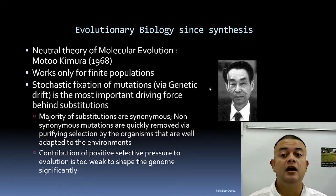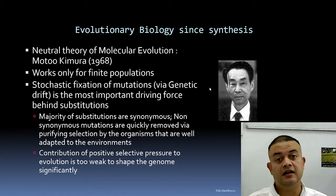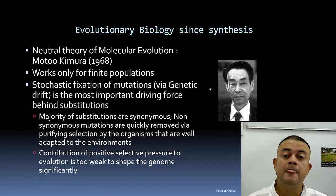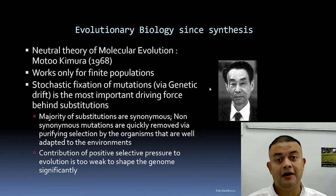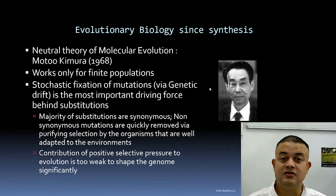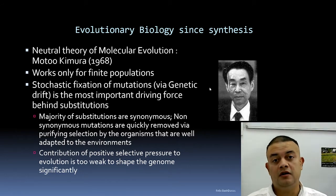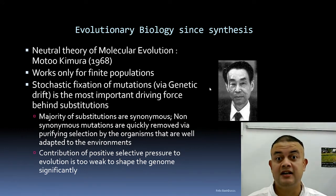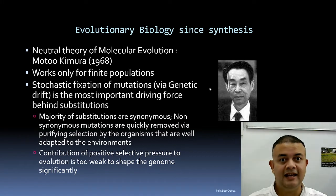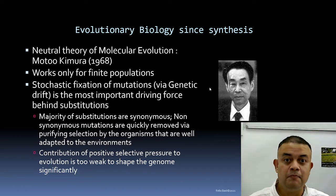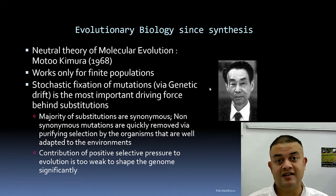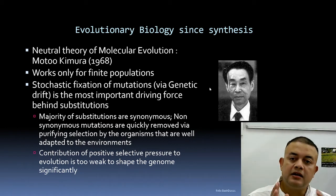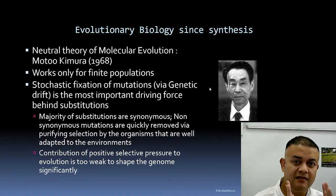Post-synthesis, the biggest development is Motoo Kimura's neutral theory of molecular evolution. Kimura was born in Japan — I've actually been to his native place called Okazaki, a small town in central Japan. Interestingly, that is the same place associated with Okazaki fragments in DNA replication, named after another geneticist from near Nagoya. His theory is very interesting and we will come to it shortly.